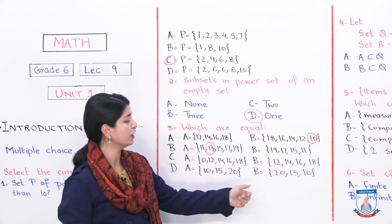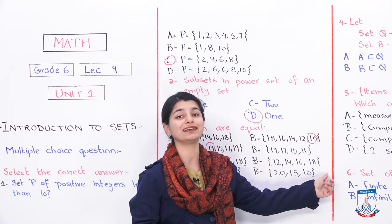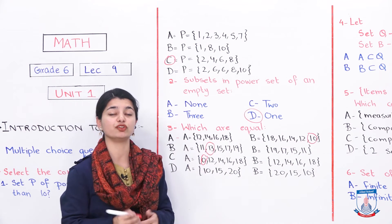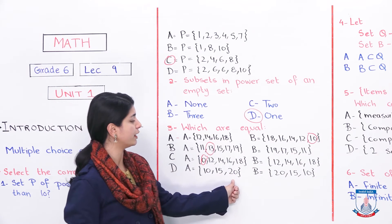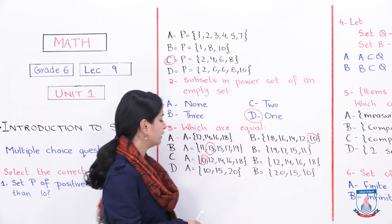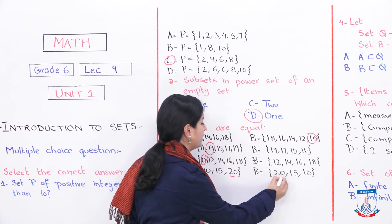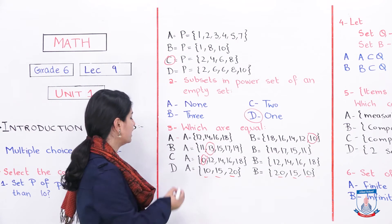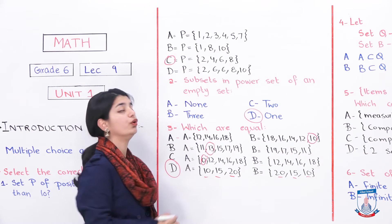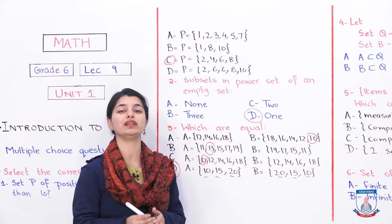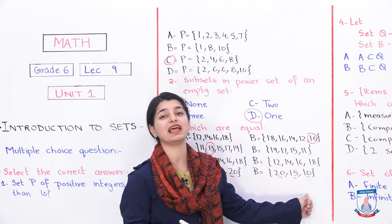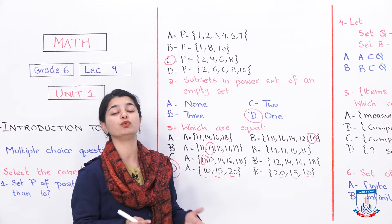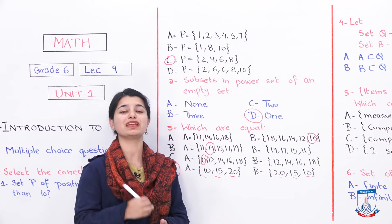Option C has sets where 0 is present in one set but not the other — they are not equal. Option D has A = {10, 15, 20} and B = {20, 15, 10} — all three elements are identical: 20 and 20, 15 and 15, 10 and 10. We can decide that option D contains two equal sets because set A and set B contain exactly the same elements. When the elements are the same, the two sets are equal.